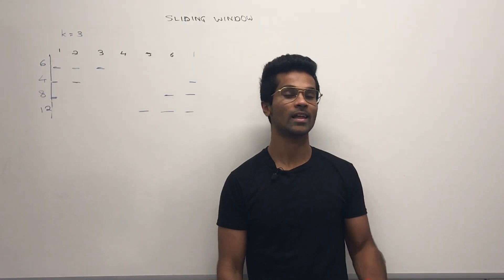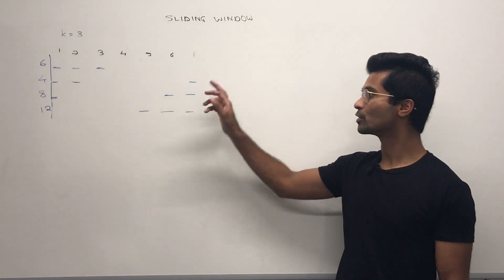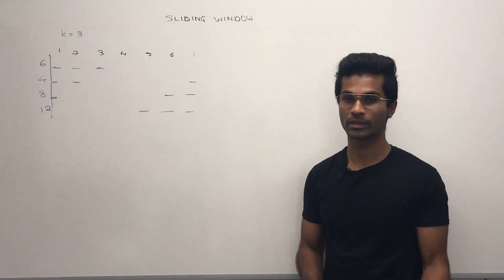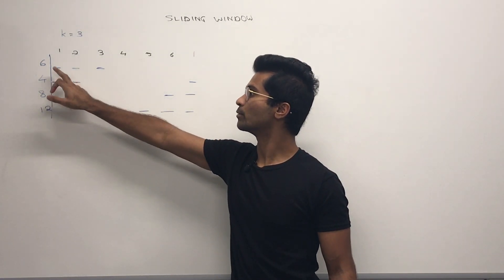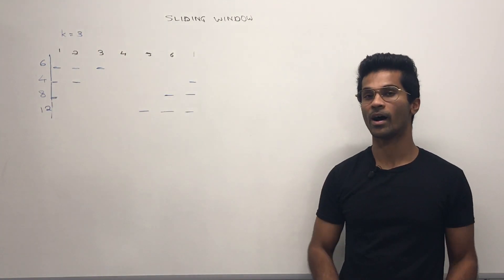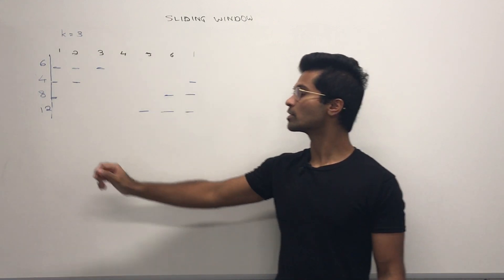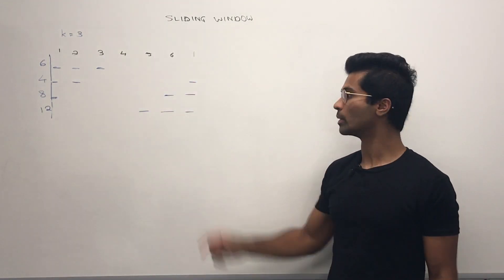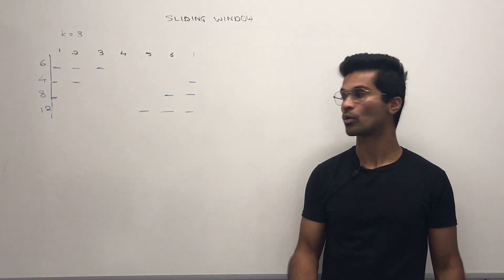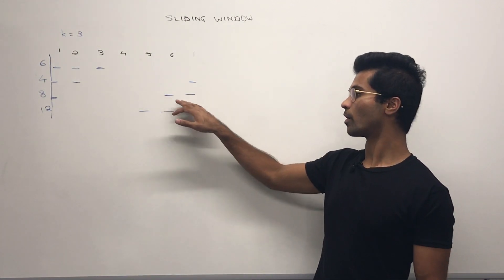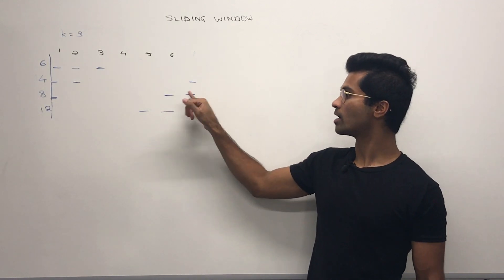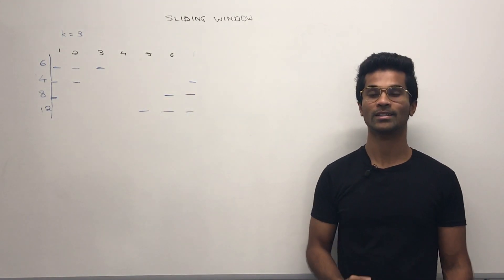So how do we get the sliding window approach for this problem? Here's our example — we have three moves. The blue dashes represent which numbers we picked. We get six if we pick one, two, and three. We get four if we pick one, two, and one. Now keep in mind, it doesn't matter which order we pick — whether we pick one, two, and then one, or one, one, and then two, we're still going to have a score of four. Similarly, for the third possibility, whether we pick one, one, and six, or one, six, and then one, we're still going to get a score of eight.